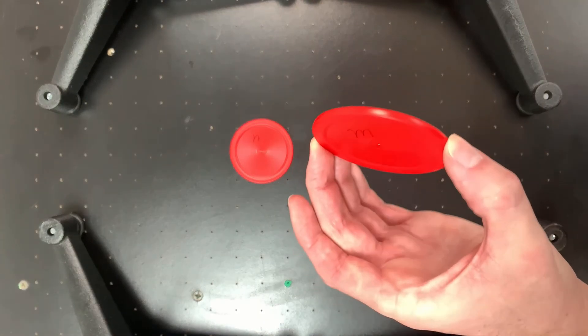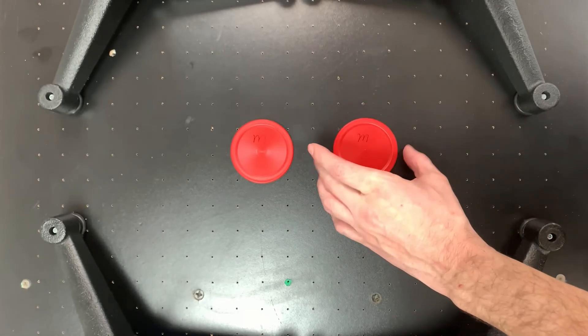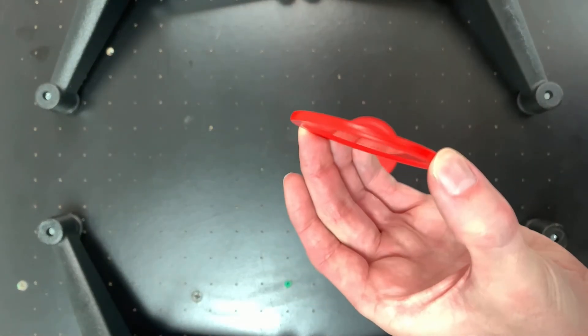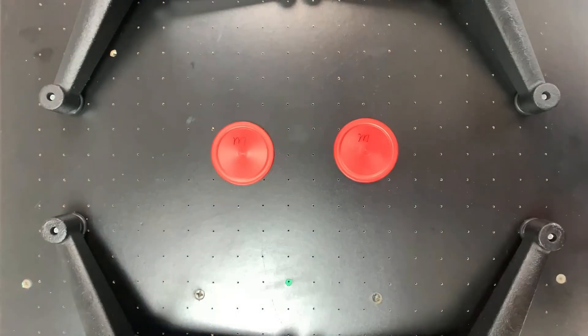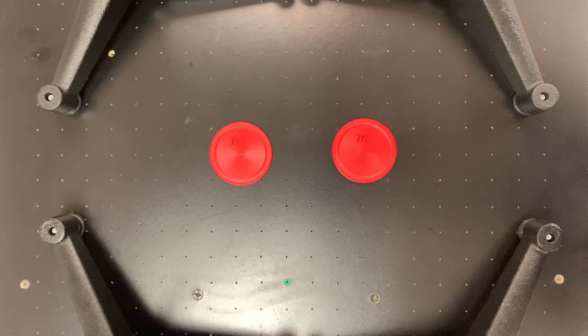Both of these red pucks have the same mass, M. I'm turning them to the side here to prove that they have the same shape. Now watch them collide in the absence of surface friction.